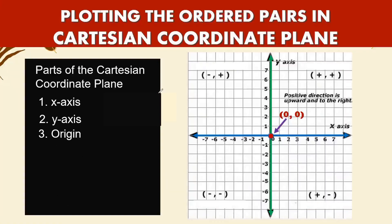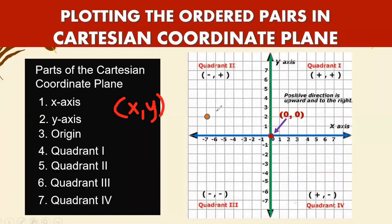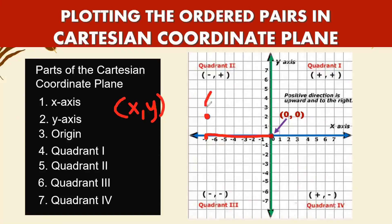An ordered pair is noted by the coordinate of x and y. For example, we have a point given. To read this point, we look from the origin going to the left, and that is aligned to negative seven. So your x is negative seven.